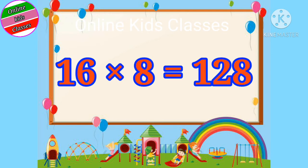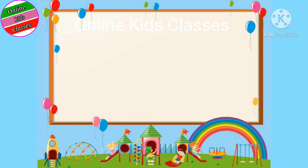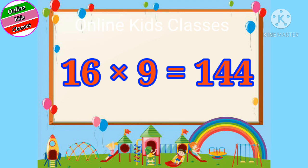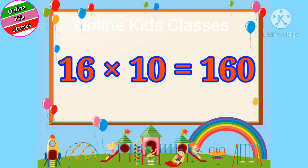16 sevens are 112. 16 eights are 128. 16 nines are 144. 16 tens are 160.